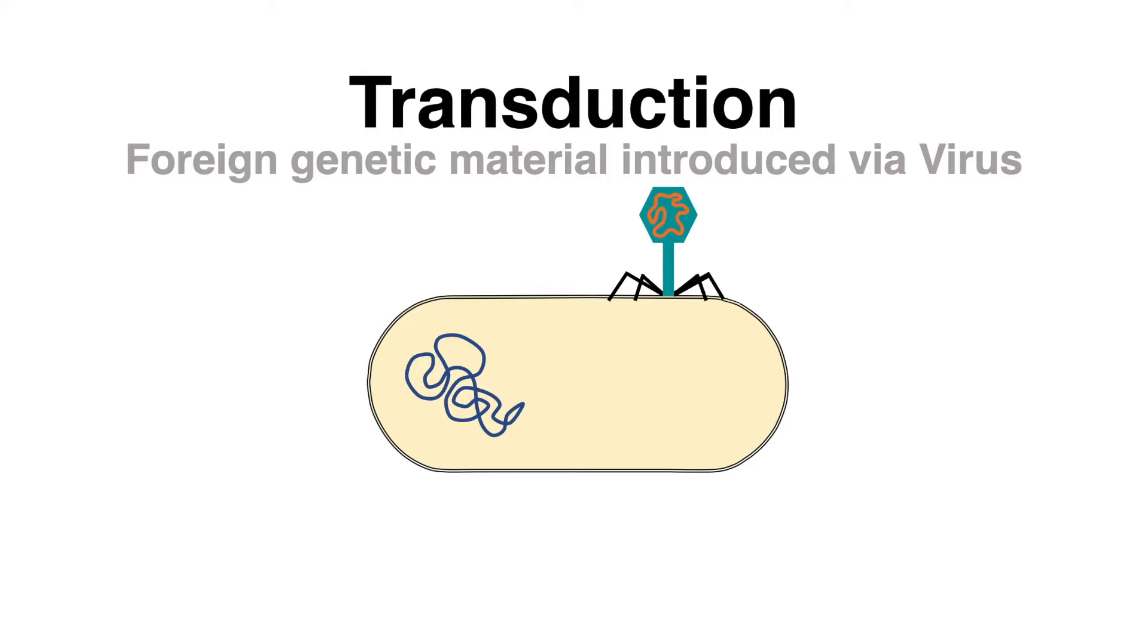The viral nucleic acid is entering the host cell and is integrated in the bacterial DNA. Upon excision, errors may occur when parts of the bacterial DNA are additionally excised by accident.